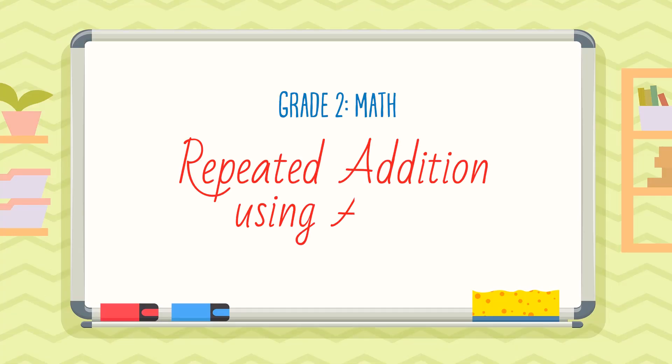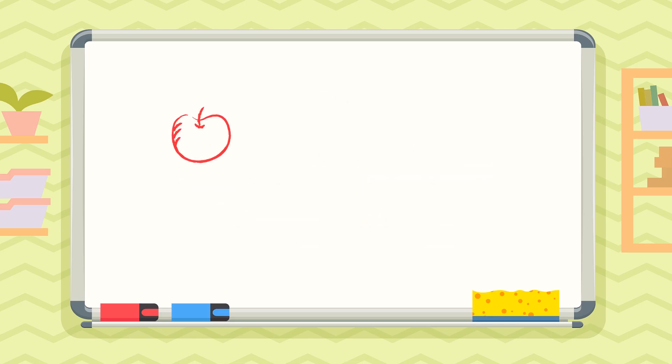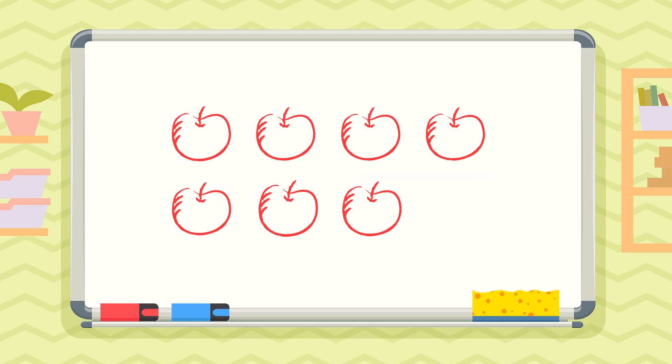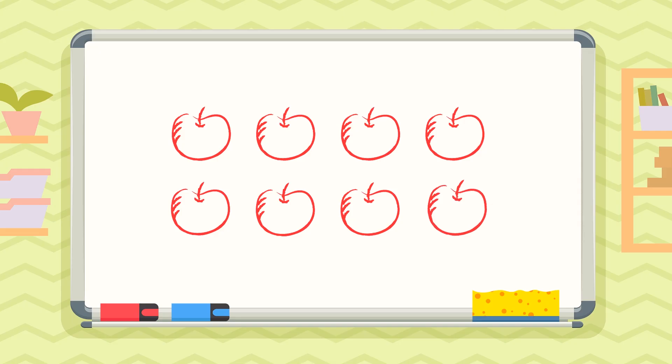There are many ways to represent the same number using addition. Today we're going to see how we can use repeated addition to find the total number of fruit shown in a picture. This will make the adding a lot easier for us because we'll just be adding the same number over and over again. We'll start to see a pattern.